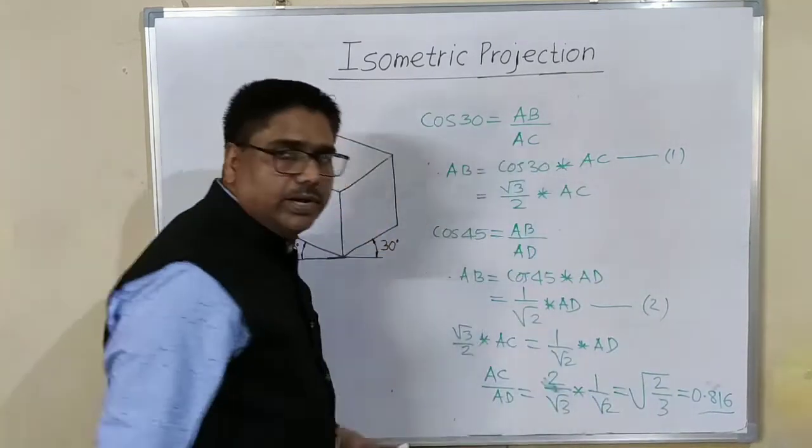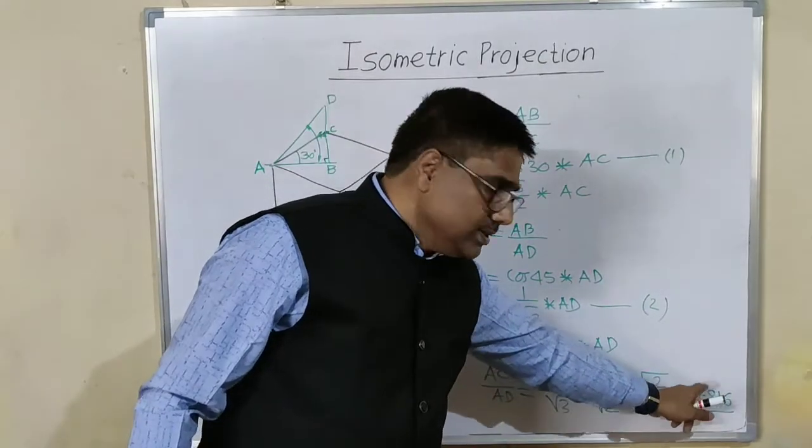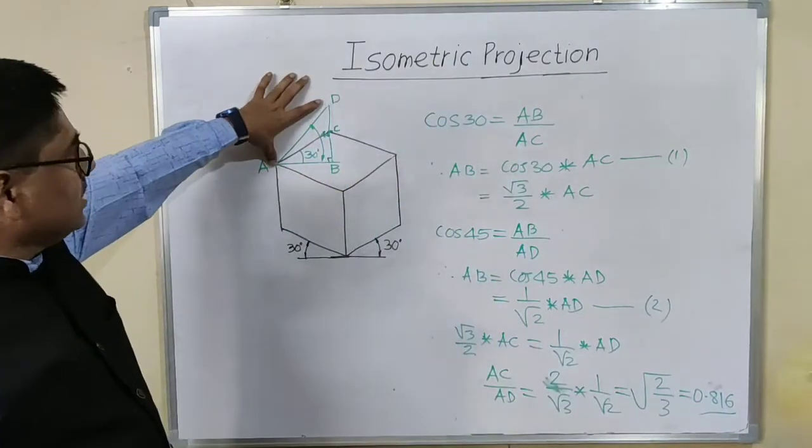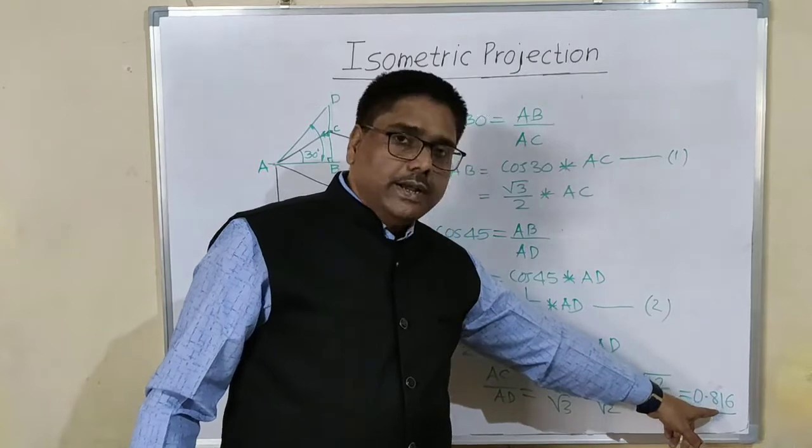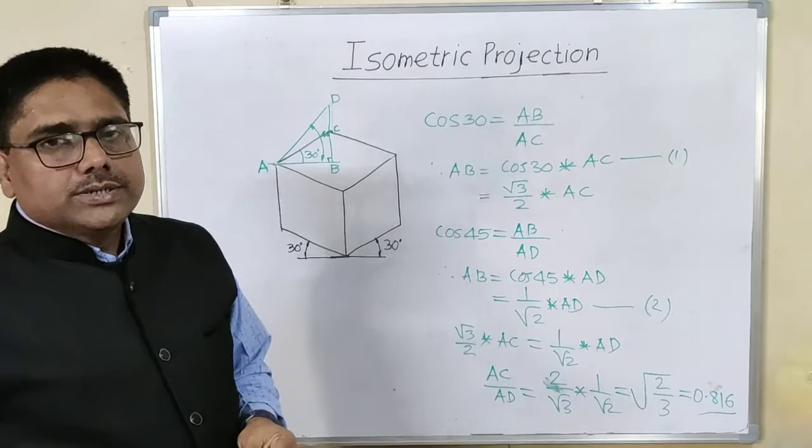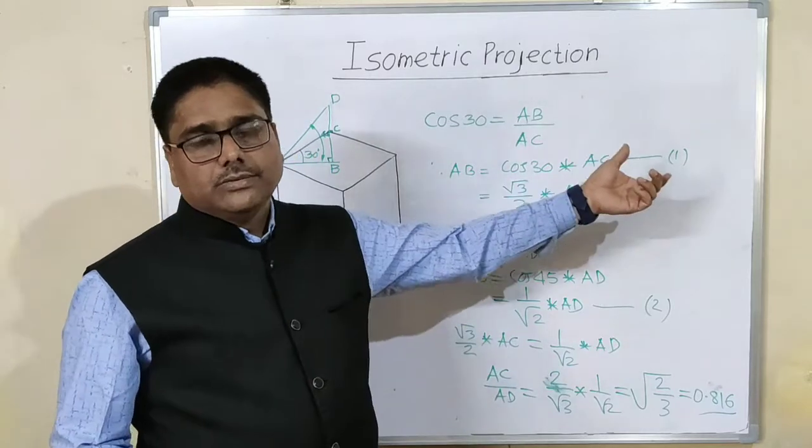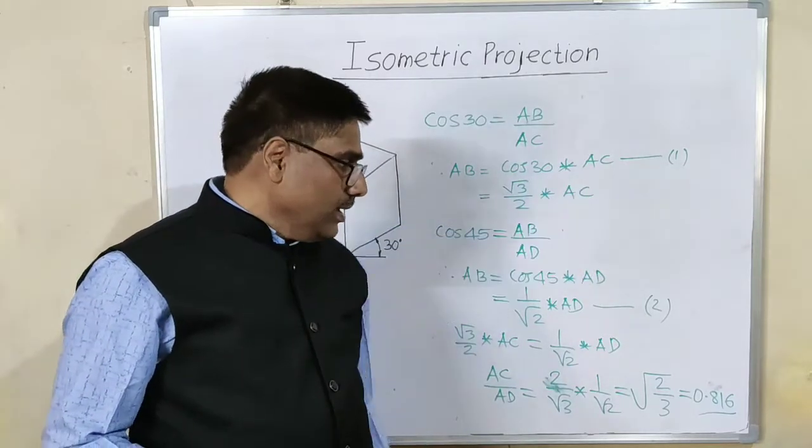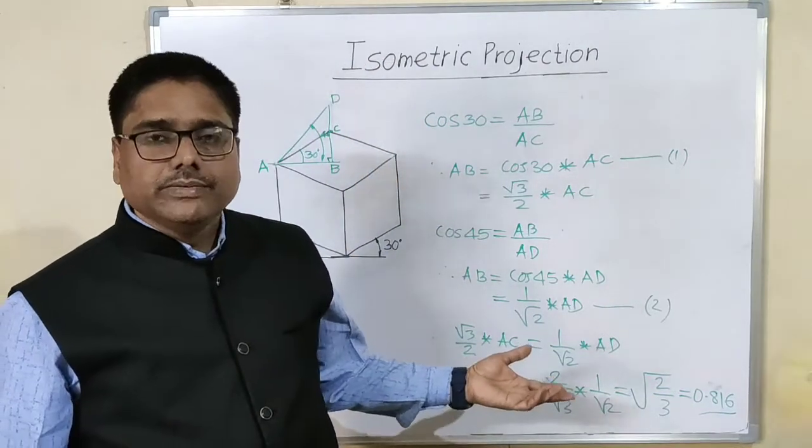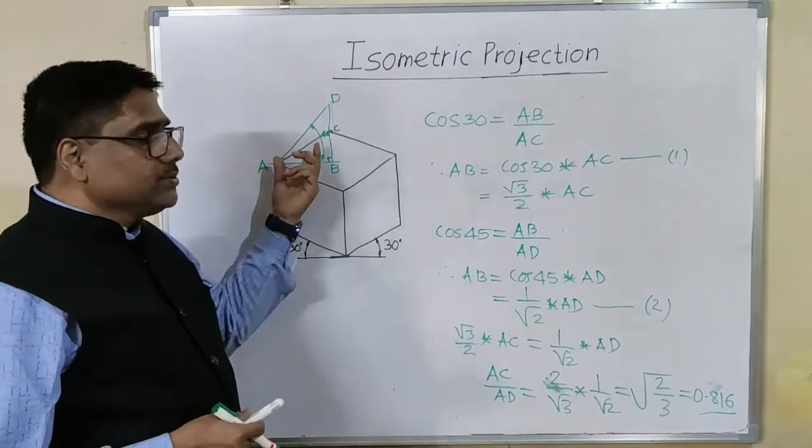From this, what we can conclude is each and every dimension will be reduced by this much extent, that is approximately 20%. Suppose original dimension is 100 mm, then it will be around 80 mm, and exact value is 81.6 mm. But it is not advised to calculate each and every dimension while drawing isometric projection, because least count of our scale is just 1 mm, and many times we will get fractional values which cannot be transferred.